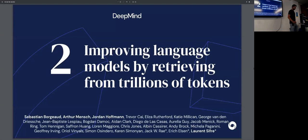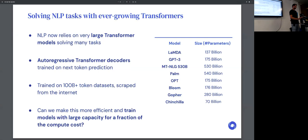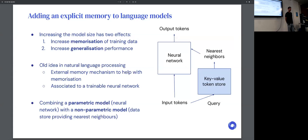So yeah, let's go into RETRO work on augmenting these large language models with retrieval. NLP realizes more and more these very large transformer models for solving many tasks. In particular, these are mostly autoregressive transformer decoders trained on the next token prediction task on very large datasets. One of the questions we tried to answer here is: can we make this more efficient and train models with large capacity for only a fraction of the compute costs by actually changing the model? We're getting rid of this third assumption I had earlier that was fixed and trying to find better model classes that scale more efficiently.